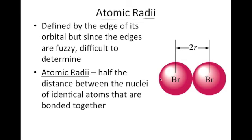Now because an atom has an electron cloud, and clouds don't have well-defined edges, what they do is bond two identical atoms together and measure the distance between their nuclei. So in the center of each atom you have your nuclei, and if you measure the distance from the center of one atom to the center of the next, that's going to be two radii — so you just cut it in half to get your radius.